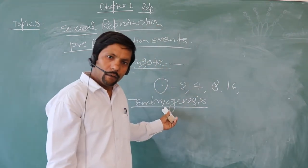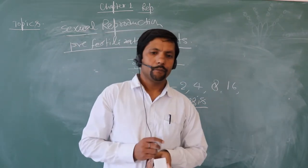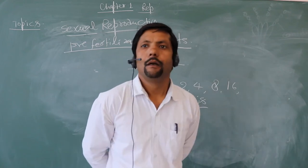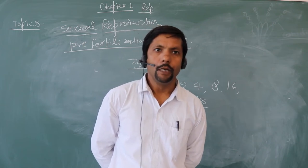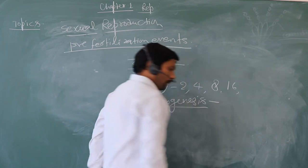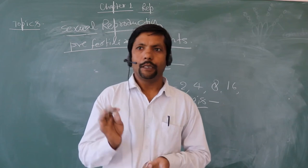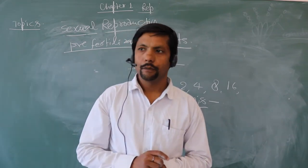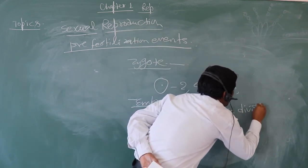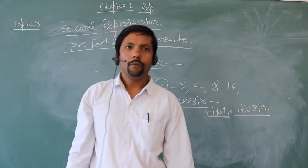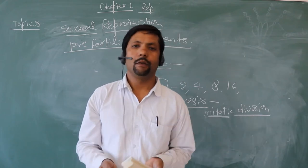The cells divide, differentiate, and take their functions separately to produce the new individual. In embryogenesis, in most diploid organisms, the cells divide through mitotic division — no need for reduction division. The same cells divide through mitosis and contain the same number of chromosomes.